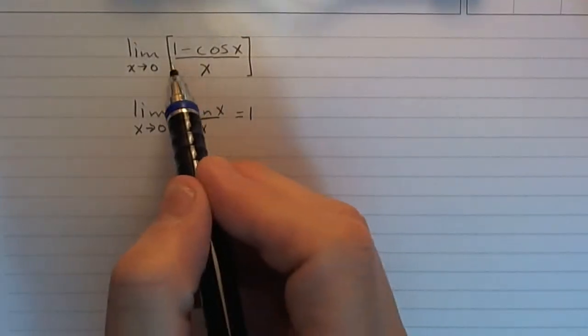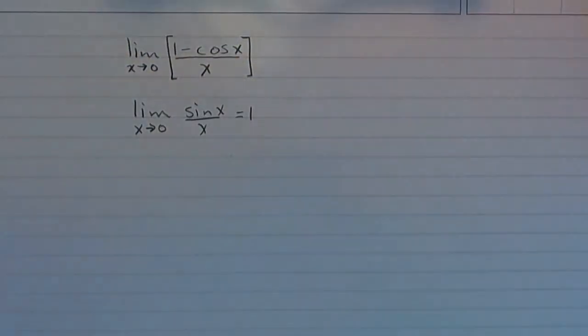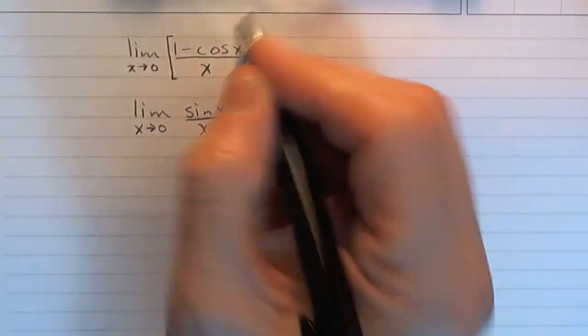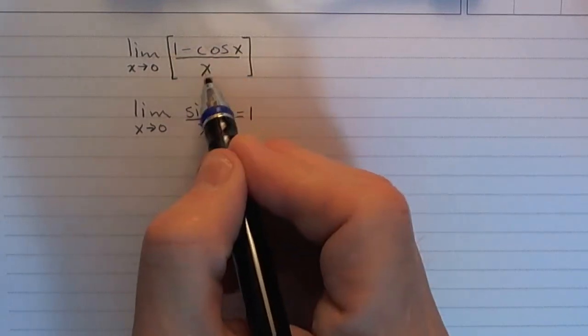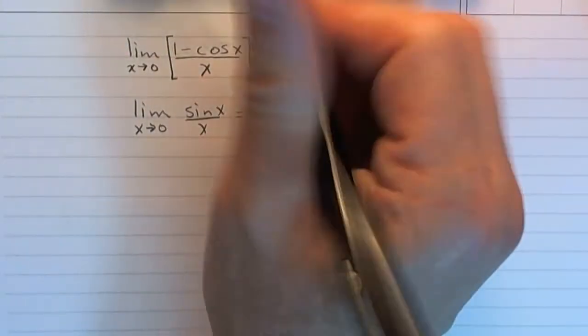But now let's see if we can figure out what this limit is. And this is also going to be one of our celebrity limits. This is a limit we need to keep in mind. Well, of course, if I put a 0 in, I get 1 minus 1 up top, which is 0 over 0. So let's do this.